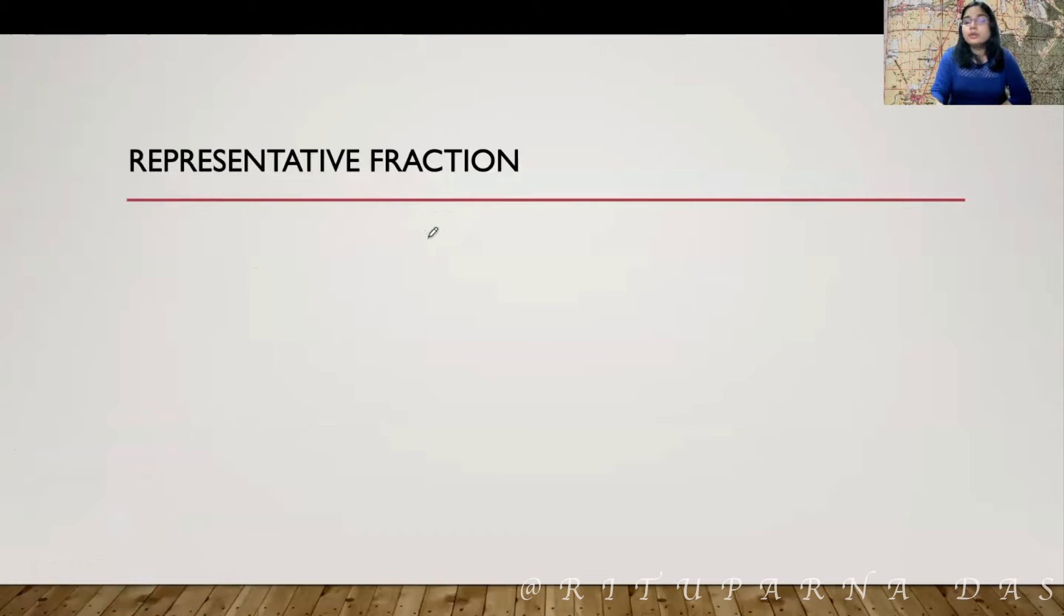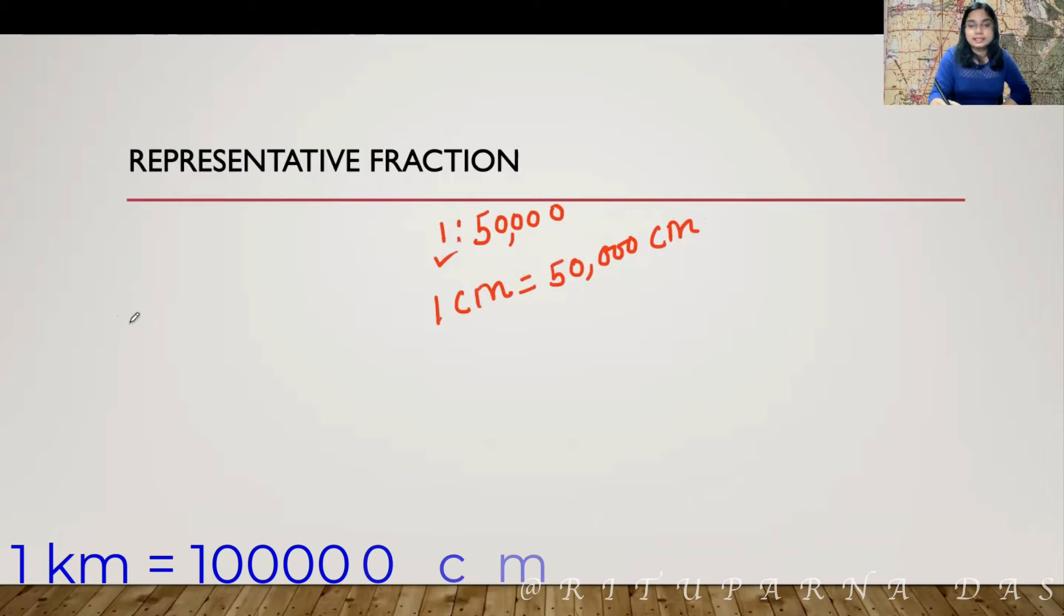Now, if I want to simplify it, I can write at first 1 is to 50,000. As I already said, the numerator is 1. We can write any unit. So, we can simply write 1 cm is equal to 50,000 cm. Now, if you want to convert it into the verbal scale, we know that 1 km is equal to 1 lakh cm. So, we can do 1 cm is equal to 50,000 divided by 1 lakh.